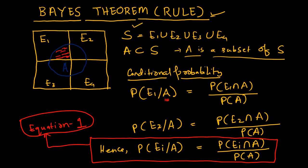Similarly, the probability of E2 given A will be this area and then probability of A which is the total one. Mathematically we can write it as probability of E1 intersection A divided by probability of A. Similarly, we can also write probability of E2 intersection A divided by probability of A. So when we generalize this, we write that probability of EI — where I stands for 1, 2, 3 or 4 — given A.